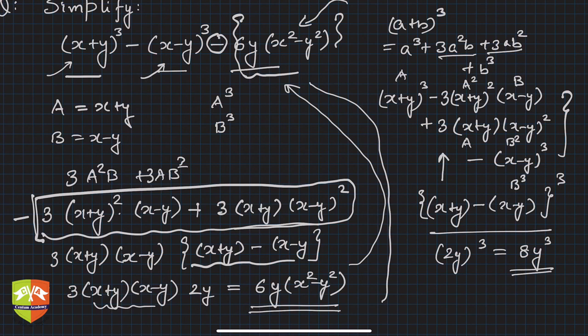We used identities and never opened the brackets to simplify it. That's the learning. The moment I saw two cubes and a term like this, I started thinking it could be reduced into a cube of a binomial form. Then I don't need to do the mechanical multiplication part. If you open the brackets and solve it, you'll also get 8y³.